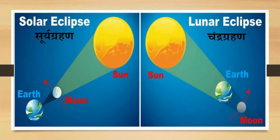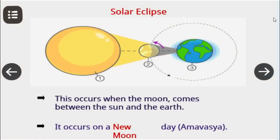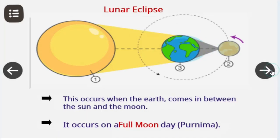Solar eclipse occurs when the Moon comes in between the Sun and the Earth. As a result, the Moon blocks the light of the Sun from reaching the Earth's surface and casts a shadow on it.